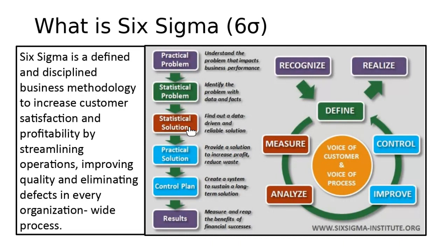That statistical solution is then converted to a practical solution, where the process has to be adapted to fulfill the statistical solution or to perform under the new statistical solution. Then you develop a control plan to make sure the solution you have proposed can be monitored and maintained.